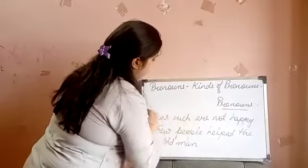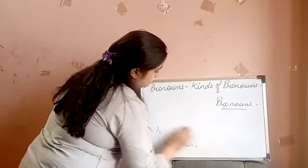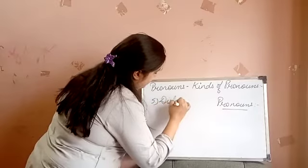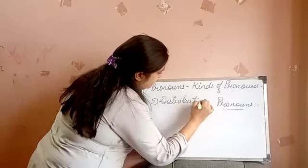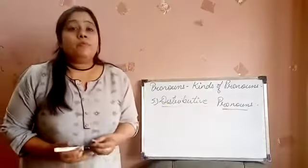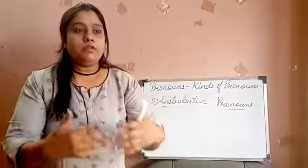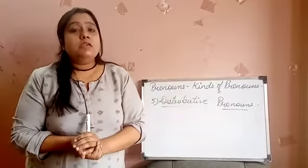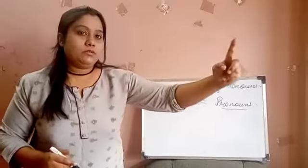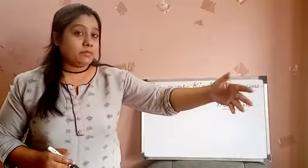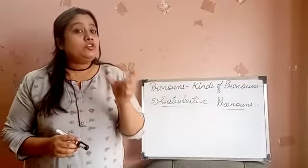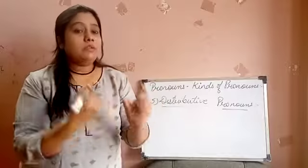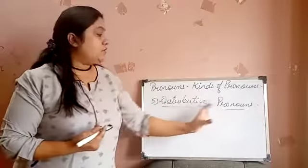Now we are coming towards the fifth kind of pronoun, that is distributive pronouns. Distributive pronouns are used when you are taking a group of two or more persons, things, or animals, but referring to each individual among that group. The word that shows each one out of that group is an example of a distributive pronoun.